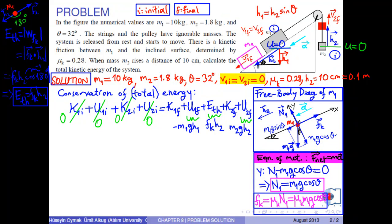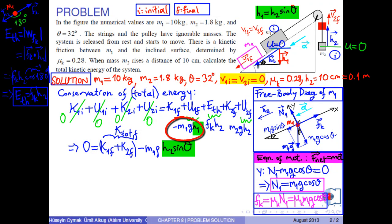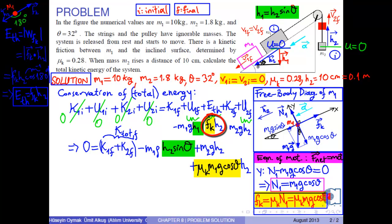If we rearrange this conservation of total energy, we obtain zero equals the final total kinetic energy of the system minus m1 times g times h2 times sin theta, since h1 is h2 times sin theta from the figure, plus m2 times g times h2, plus mu k times m1 times g times cos theta times h2, since Fk equals mu k times m1 times g times cos theta from the equation of motion.